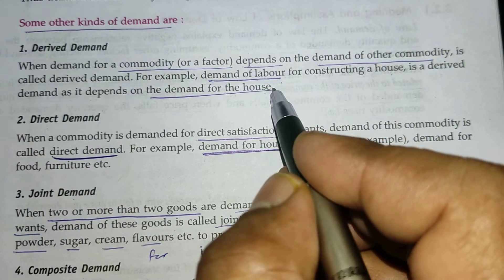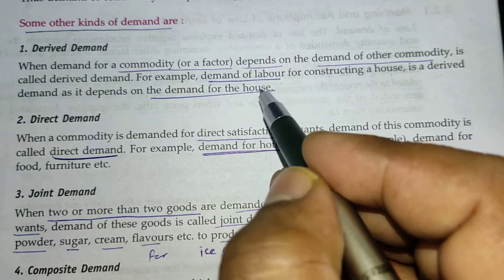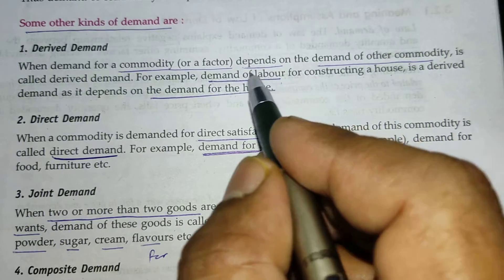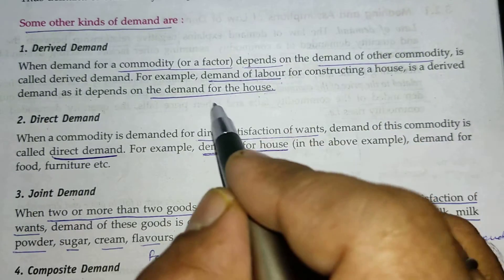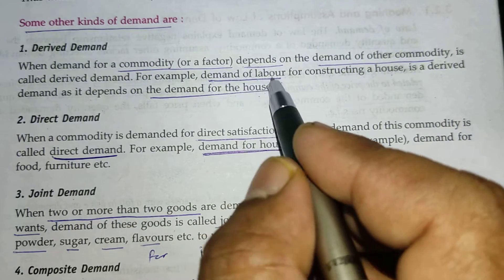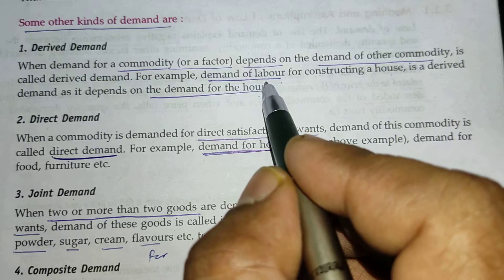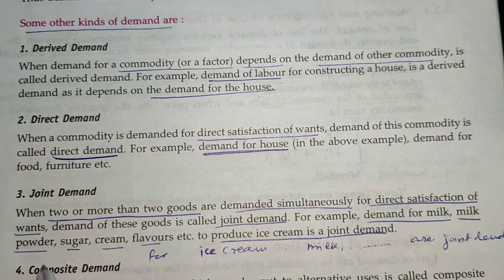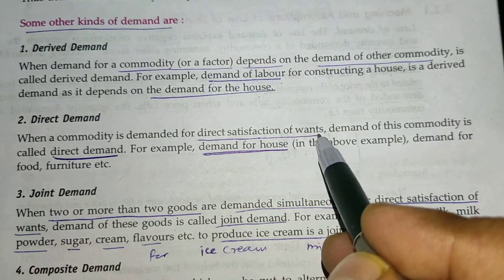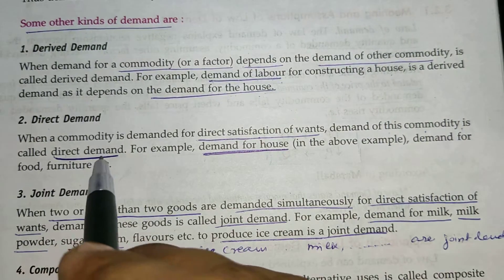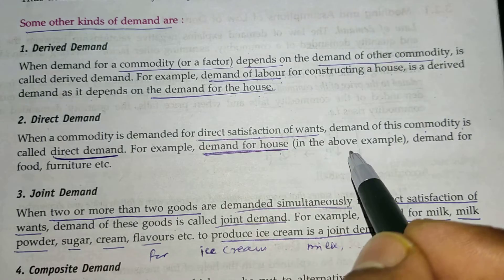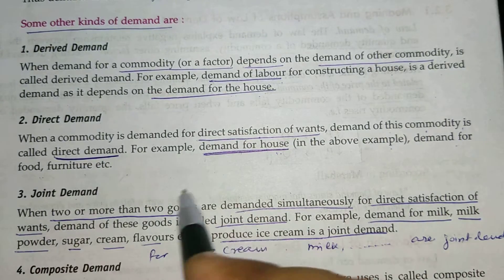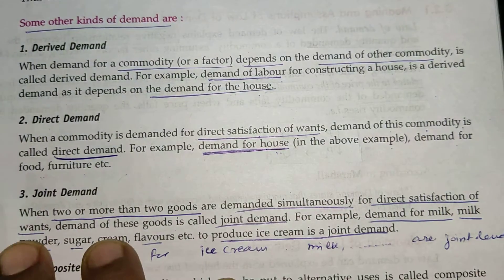Derived demand is when we are not demanding something directly but demand it because of something else. We want a house, and to build the house we need labor, so the demand for labor is derived demand. Direct demand is when a commodity is demanded for direct satisfaction of wants — for example, demand for a house, food, furniture, etc.